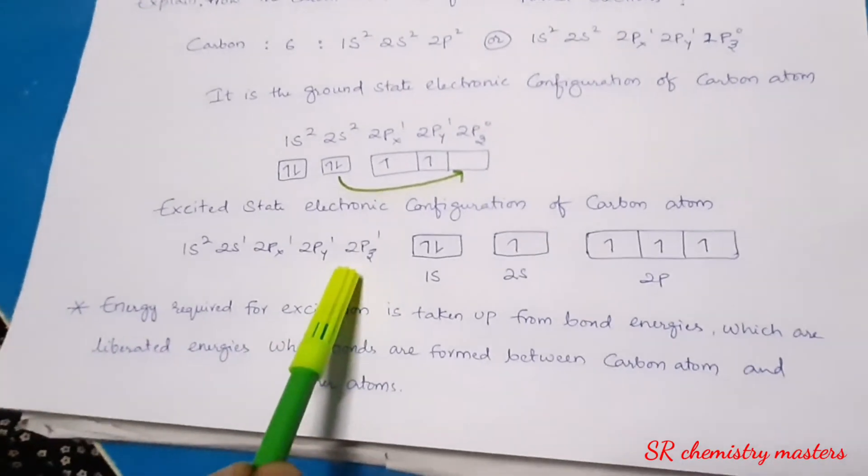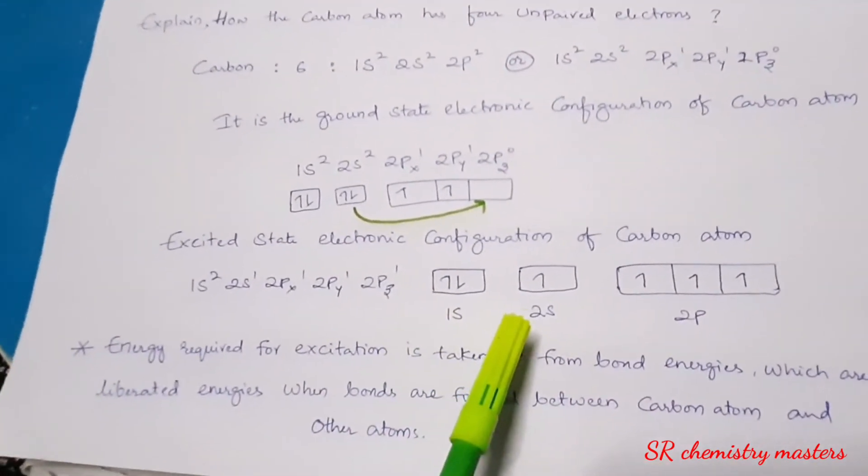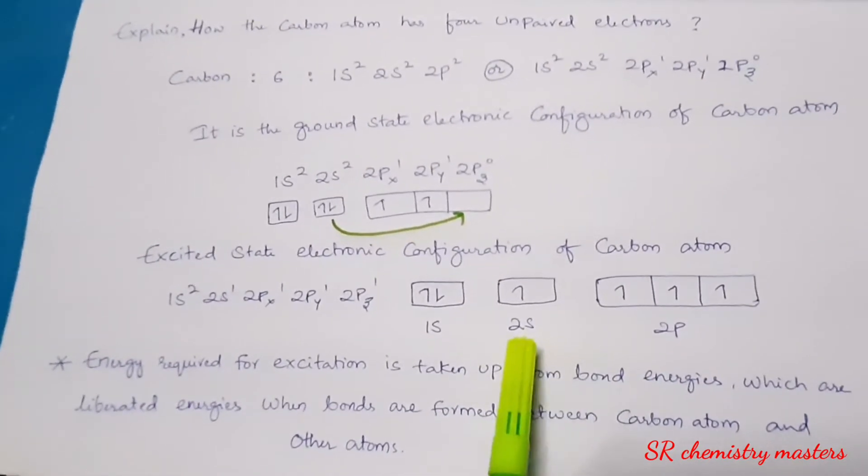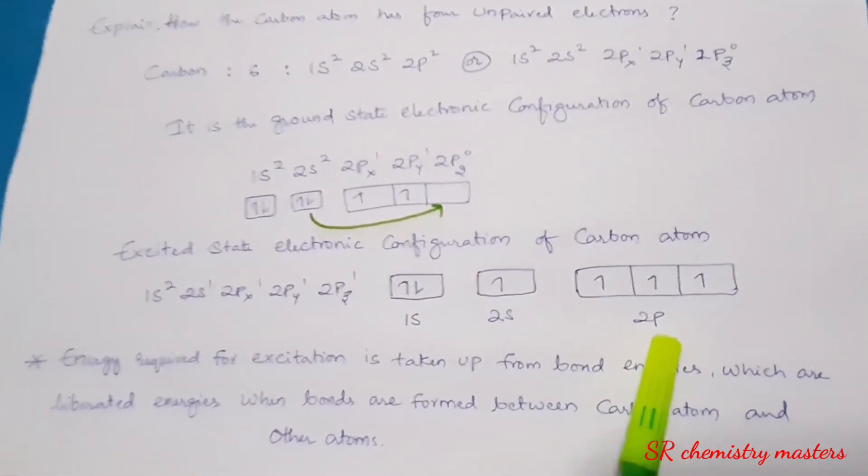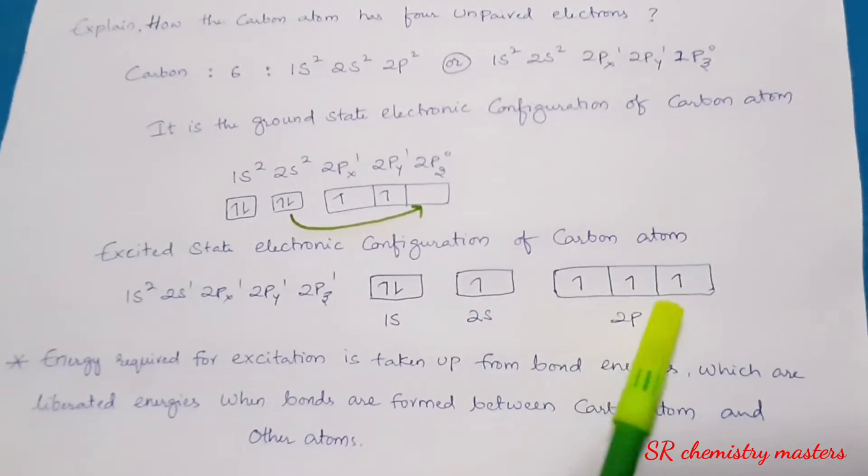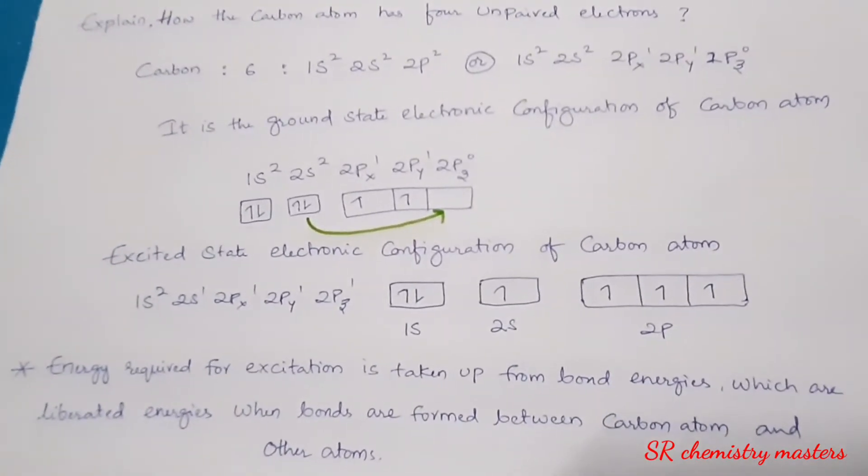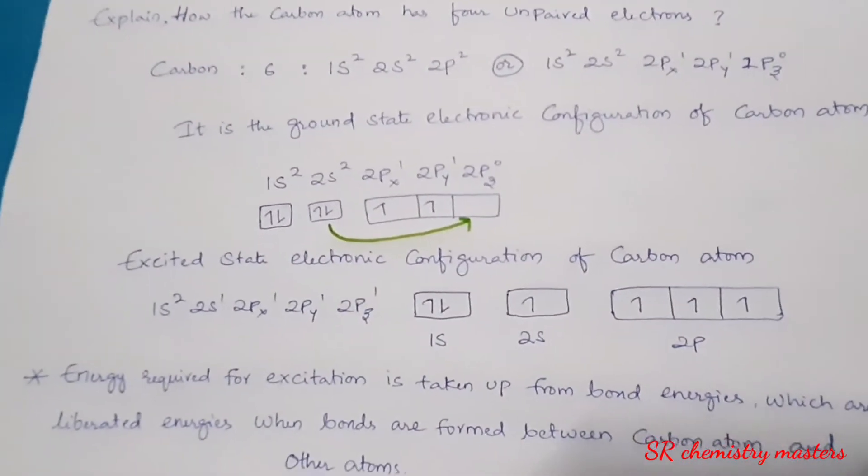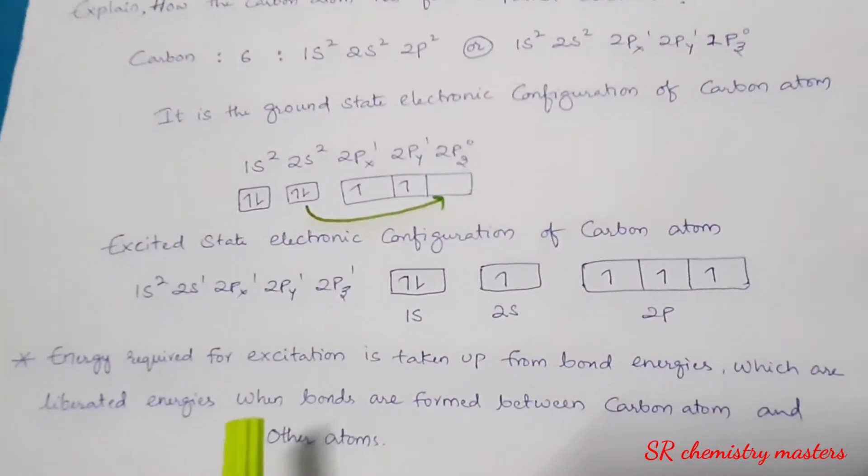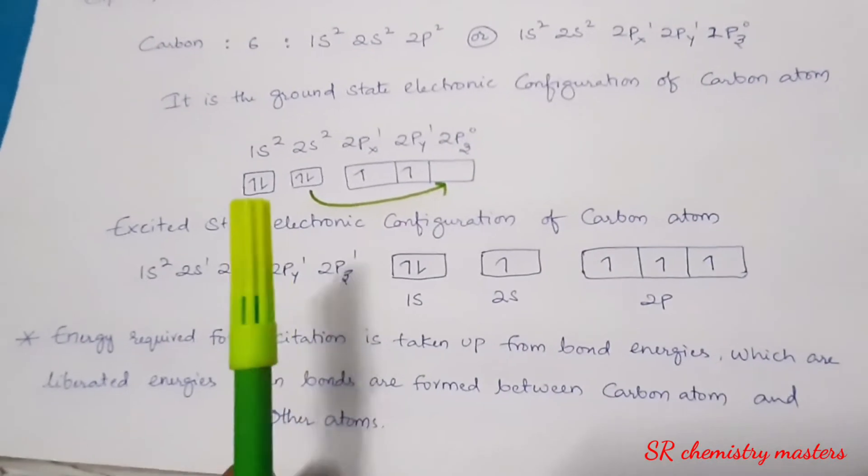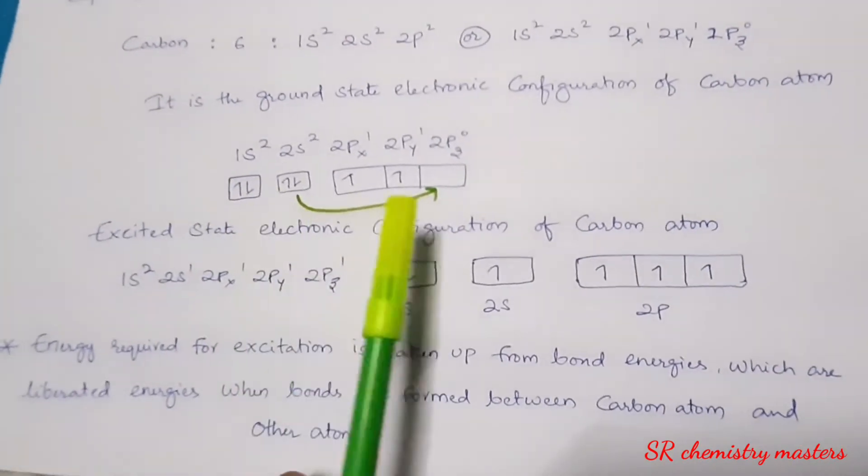If you see here, the orbital representation of this one, you can see here 2s and 2p all together are having 4 unpaired electrons. Now, a question arises: how does the carbon atom get energy, or from where does the carbon atom get energy so that the electron in the 2s gets excited to 2p?